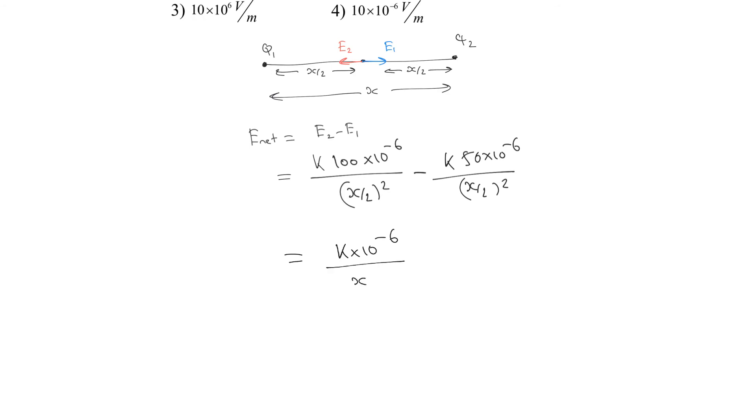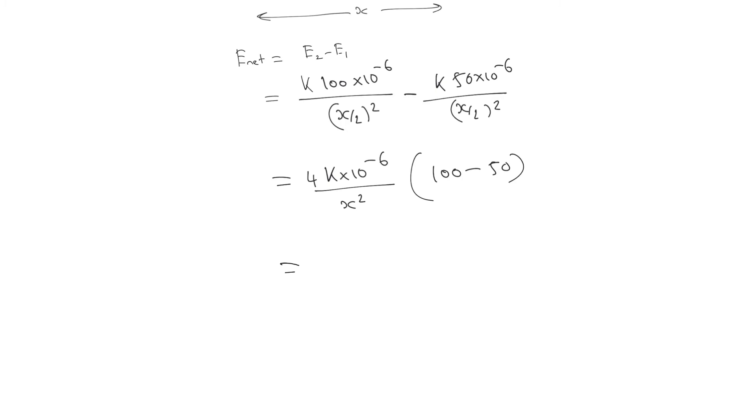We can write this will be equal to 50 into 4 into K, which is 9 into 10 raised to 9, into 10 raised to minus 6.